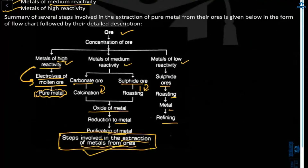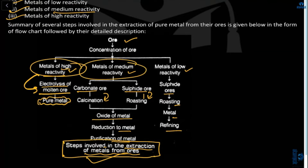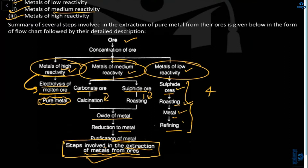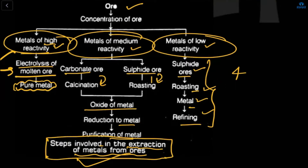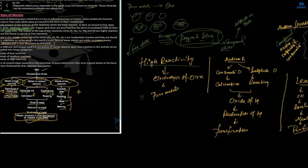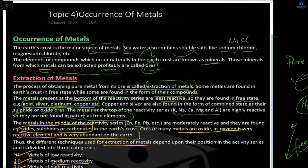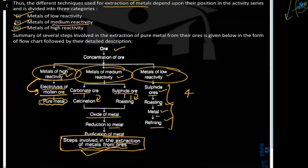For least reactivity metals, there are three steps: sulfide ore → roasting → metal purification/refining. For medium reactivity there are four steps: ores → roasting/calcination → oxide of metal → reduction → purification. This is how we extract pure metals from ores.